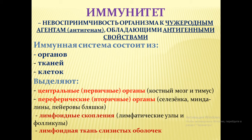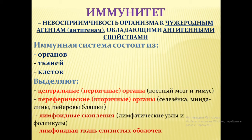Прежде всего центральные органы иммунной системы, их ещё называют первичными — это костный мозг и тимус, где происходит зарождение клеток иммунной системы. В периферических, вторичных органах — таких как селезёнка, миндалины, пейровы бляшки на протяжении желудочно-кишечного тракта — также к органам иммунной системы относятся лимфатические узлы, лимфатические фолликулы и лимфоидная ткань на слизистых оболочках.